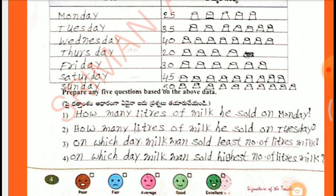Prepare any five questions based on the above data. First: How many liters of milk did he sell on Monday? Second: How many liters of milk did he sell on Tuesday? Third: On which day did the milkman sell the least number of liters of milk? Fourth: On which day did the milkman sell the highest number of liters of milk?